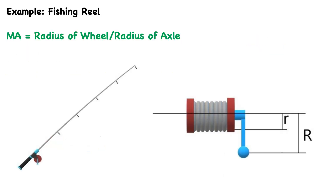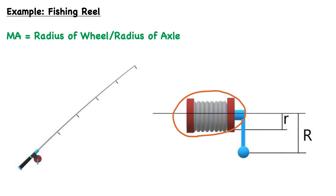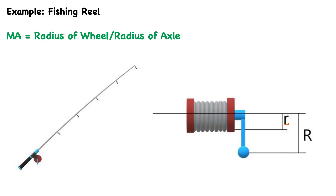Most wheel and axle systems don't look as straightforward as the one used to introduce this simple machine. One common example is the reel in a fishing rod. The handle of the reel is considered the wheel, and the body of the reel is considered the axle. Like any wheel and axle system, the wheel has a larger radius compared to the axle.